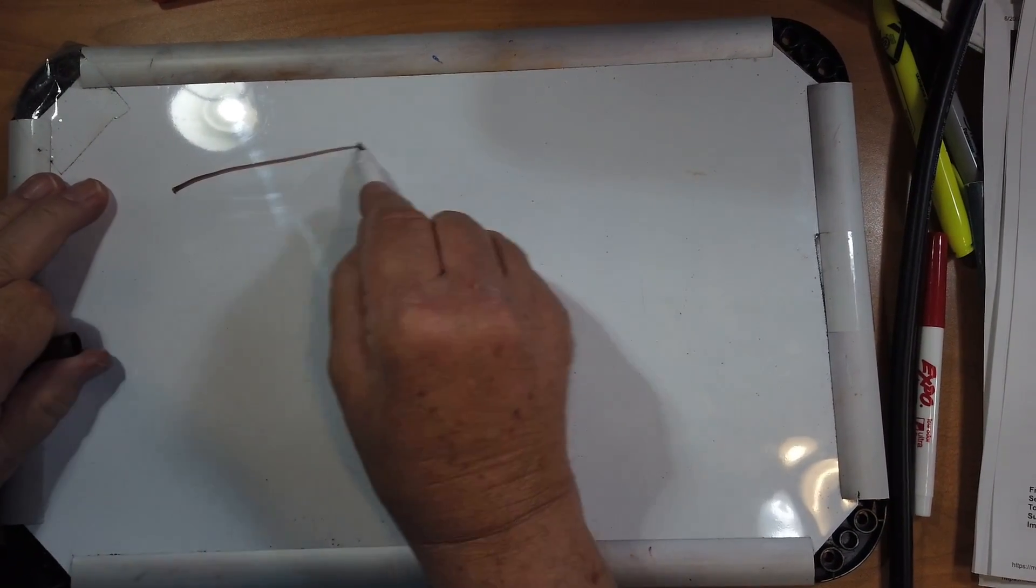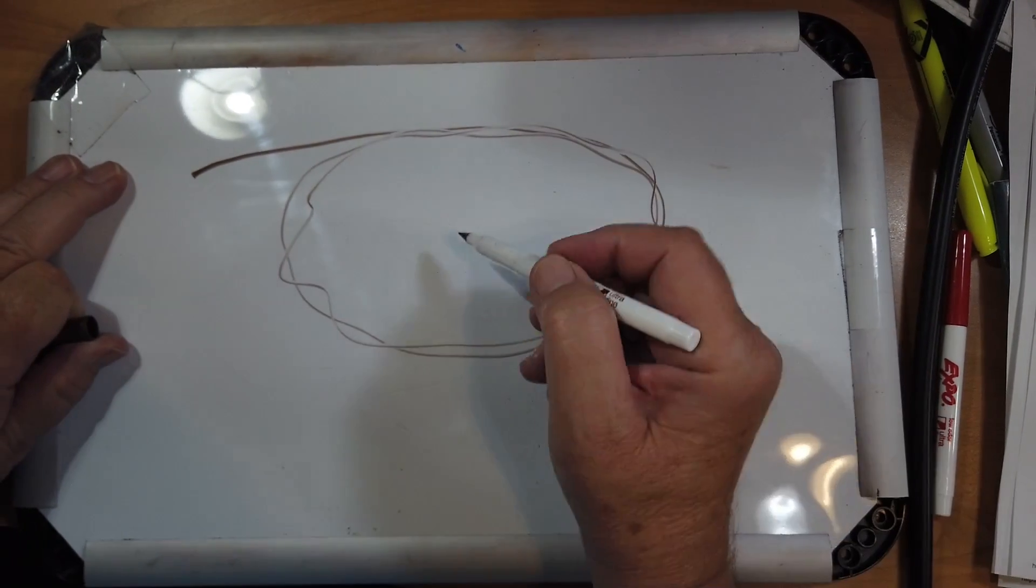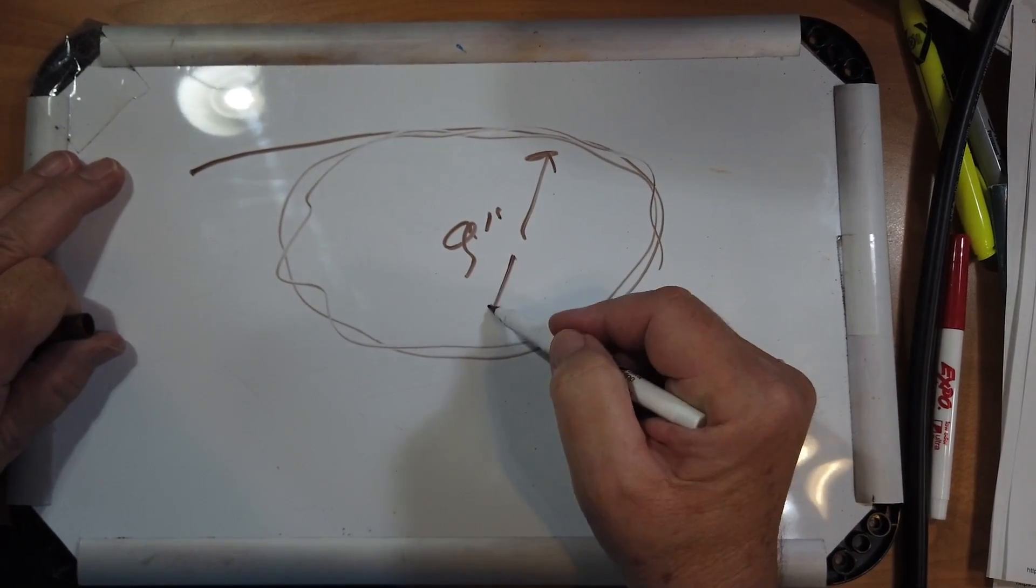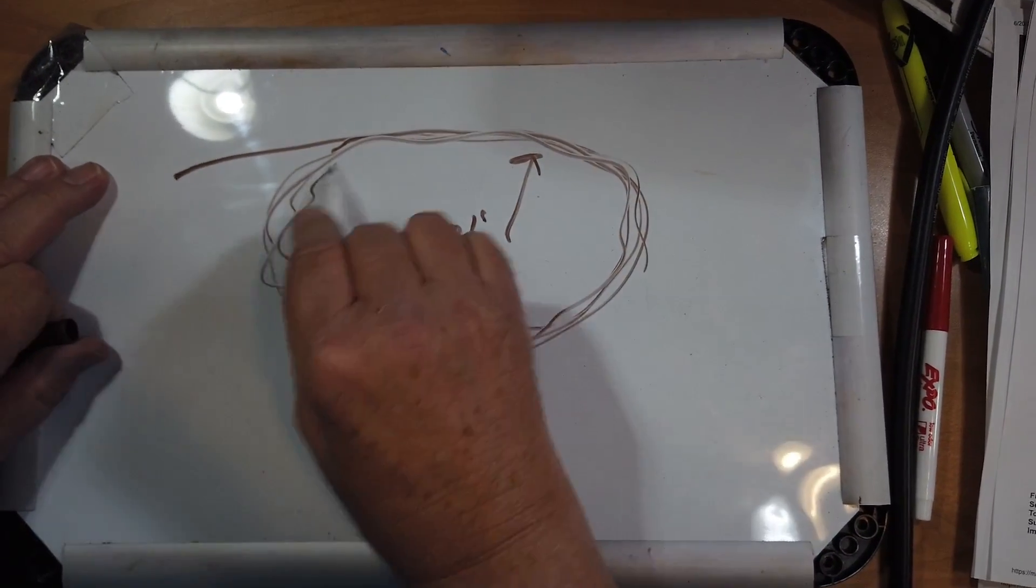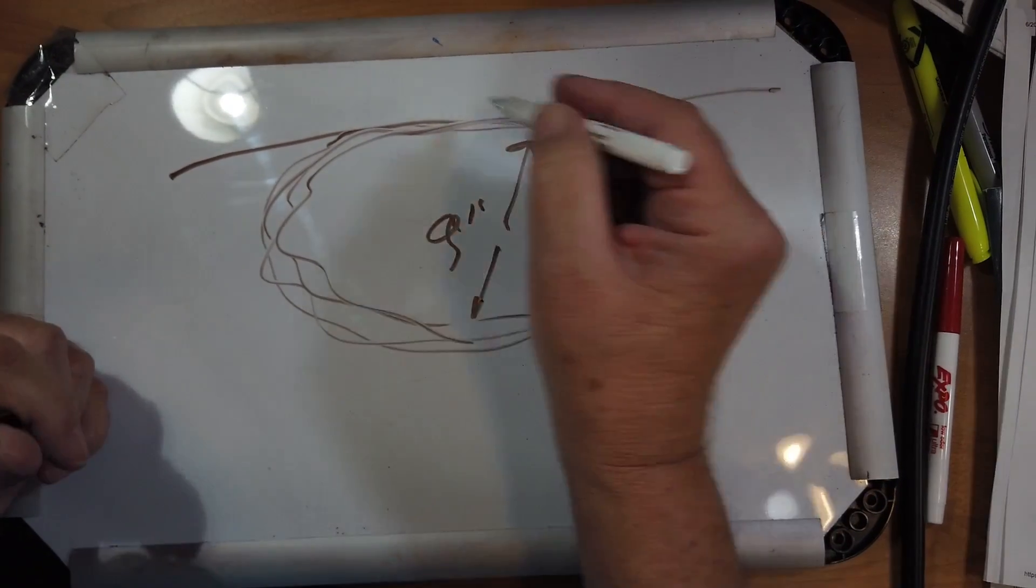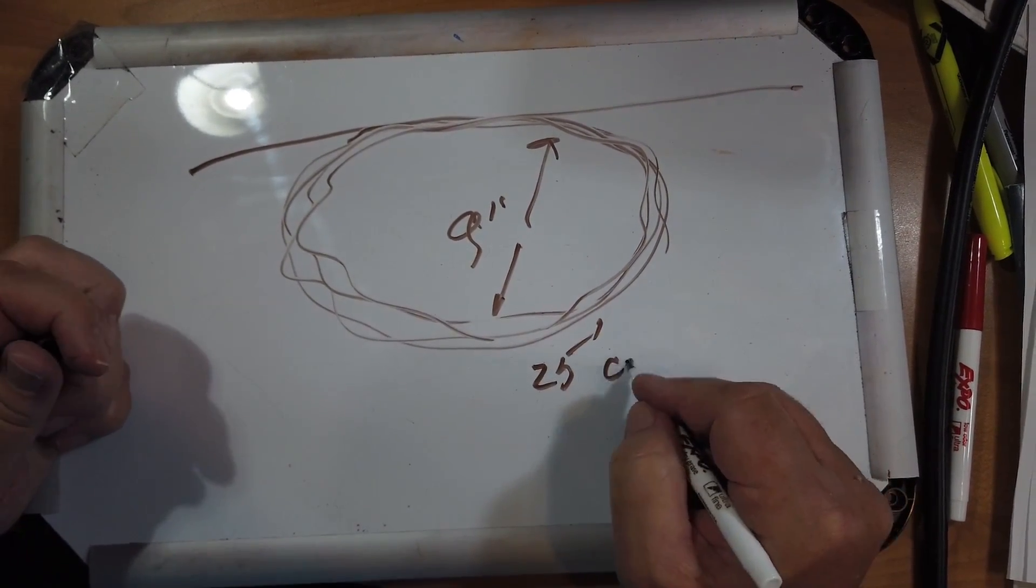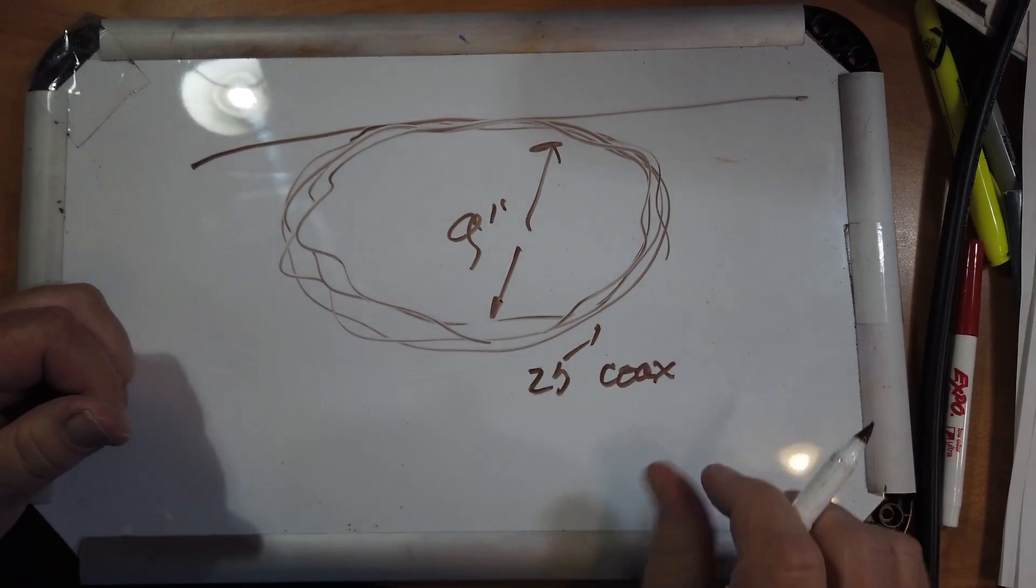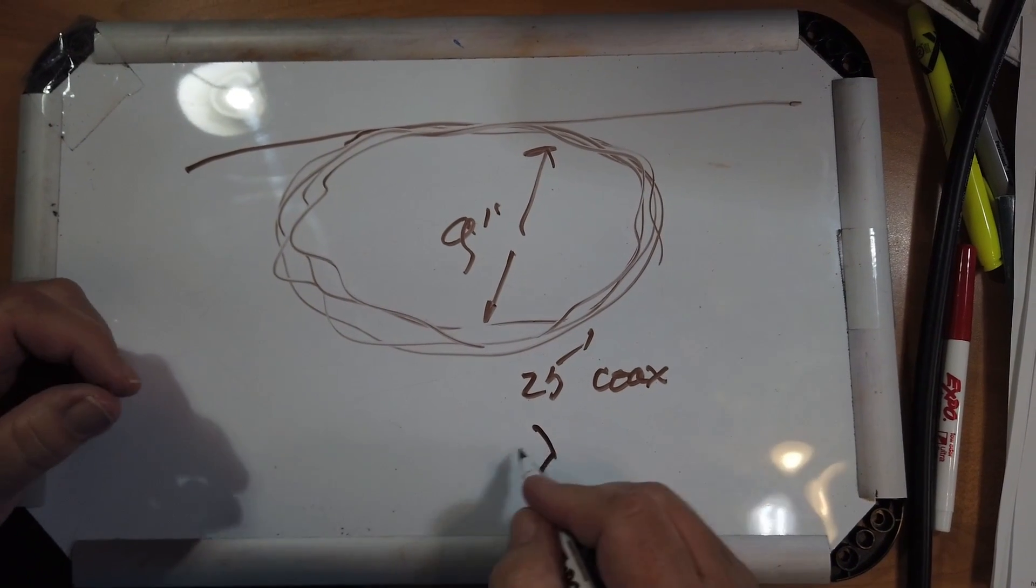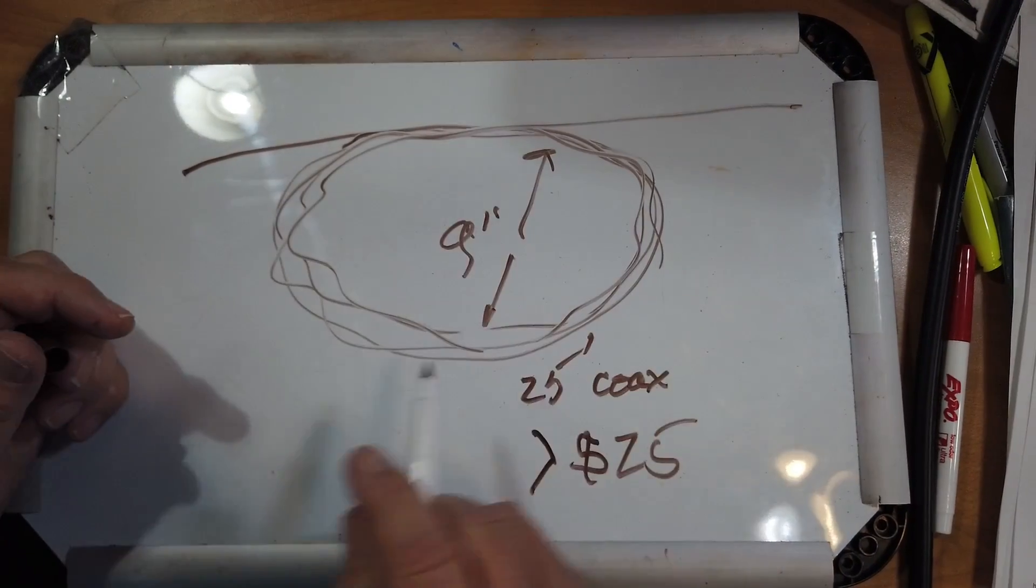Now, I'm going to draw this about full size, so let's, we take coax, here's coax, and we coil it into a loop about 9 inches in diameter, about 5 or 6 turns like that, and then out that way. Well, if you figure out what that is, it's close to 25 feet of coax, and at over a dollar a foot, that's a greater than 25 dollar choke that you can put there.